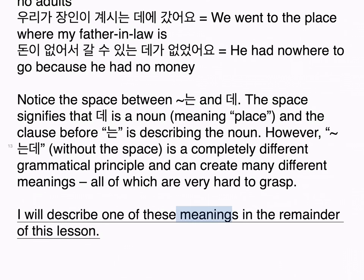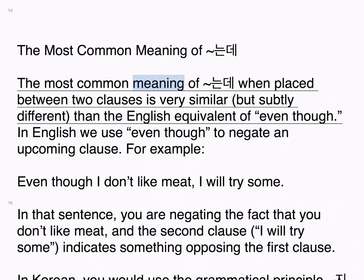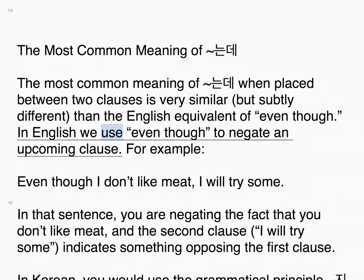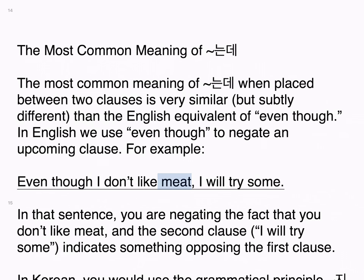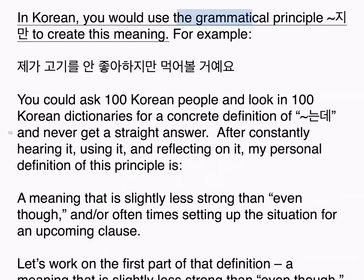I will describe one of these meanings in the remainder of this lesson. The most common meaning of 는데, when placed between two clauses, is very similar but subtly different than the English equivalent of 'even though.' In English we use 'even though' to negate an upcoming clause. For example: 'Even though I don't like meat, I will try some.' In that sentence, you are negating the fact that you don't like meat, and the second clause indicates something opposing the first. In Korean, you would use the grammatical principle 지만 to create this meaning. For example: 제가 고기를 안 좋아하지만 먹어볼 거예요.